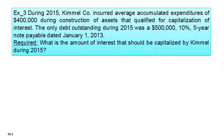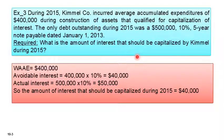Exercise 3: what is the amount of interest that should be capitalized? During 2015, Camel Company incurred average accumulated expenditure — meaning weighted average accumulated expenditure — of 400,000 during construction of assets qualifying for interest capitalization. The only debt outstanding was 500,000 at 10%, 5-year note payable. With only one debt, avoidable interest equals 400,000 times 10% = 40,000. Actual interest is 50,000. The lower amount is 40,000, so that is the capitalized interest.